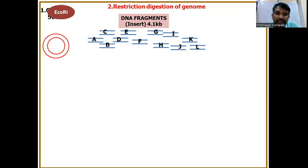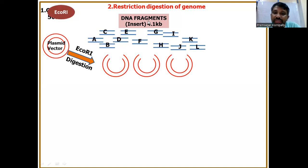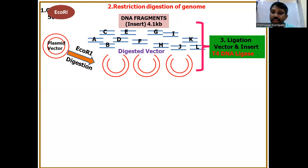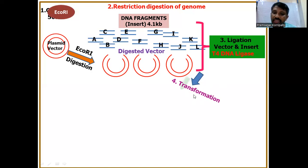Here we are using a plasmid vector, and the vector is also digested with the same enzyme. The DNA fragments and the vector now have compatible complementary ends. The DNA fragments and the digested vector are ligated using T4 DNA ligase. When DNA fragments with compatible sticky ends come together, they are ligated by T4 DNA ligase. This is the third step. The fourth step is introduction into the host cell — since we are using a plasmid vector, we transform them into E. coli.